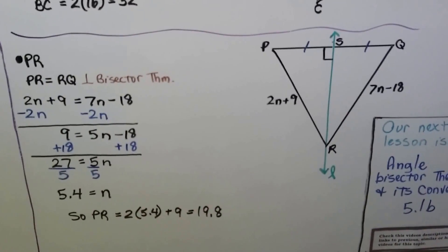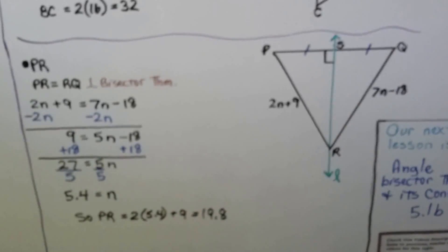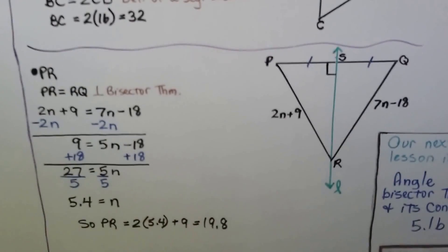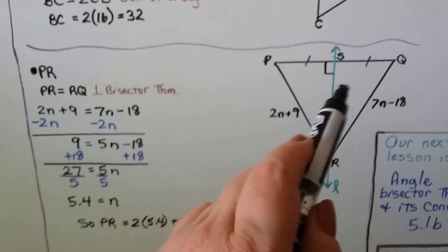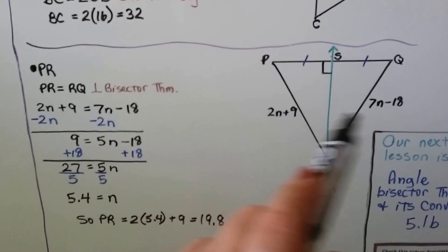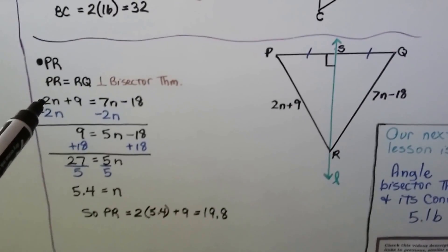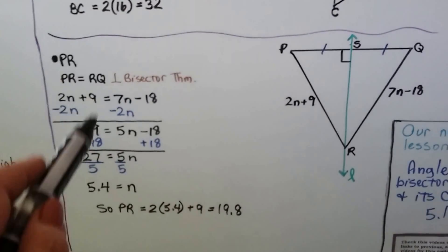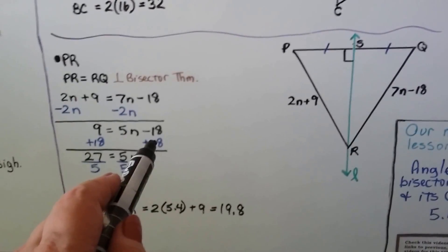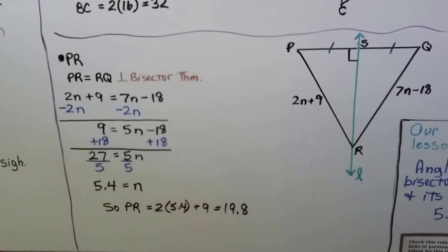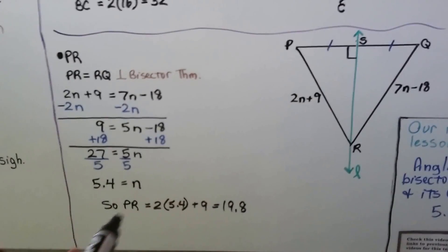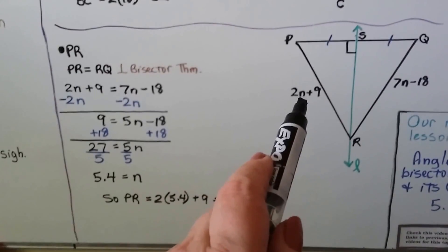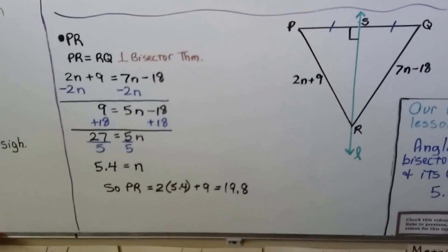Now let's look for PR, which is 2n + 9. PR and RQ are equal to each other because of the perpendicular bisector theorem — we know the angles are right angles. So our equation is 2n + 9 = 7n − 18. Subtracting 2n from each side gives 9 = 5n − 18. Adding 18 gives 27 = 5n, so n = 5.4. Then PR = 2(5.4) + 9 = 19.8.